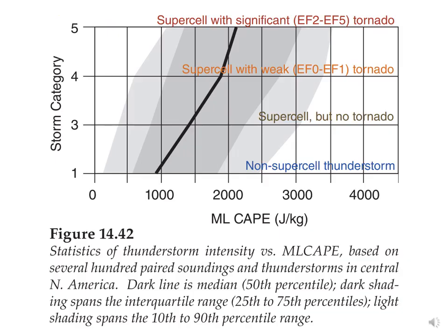Is convective available potential energy a good predictor of storm category? Not really — there's only a weak relationship. You need lift, instability, and moisture for thunderstorms to form, and boundaries and shear to get supercells. CAPE doesn't include information about boundaries, shear, or lift. You can have very high CAPE but no lifting mechanism and still not get a thunderstorm. Or if you have a lot of convective inhibition, you may not be able to tap into that CAPE.